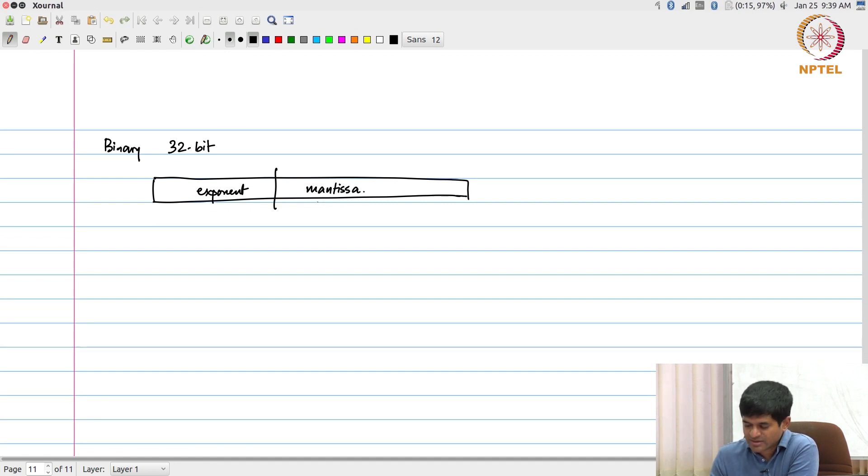And the choice, one choice that was made in this case, was to basically say I will use 23 bits to store the mantissa, 8 bits to store the exponent, and 1 bit for the sign.